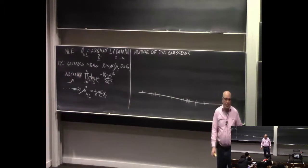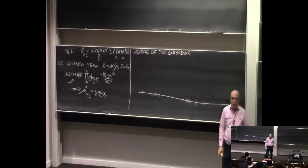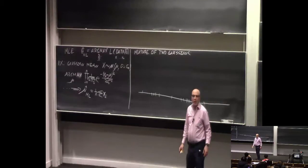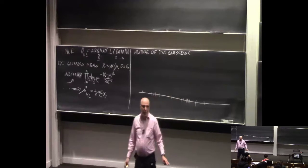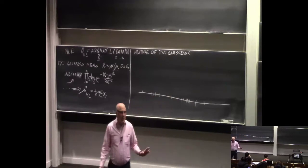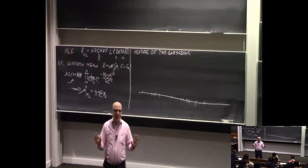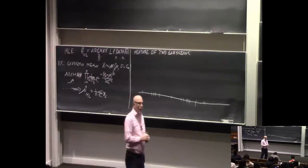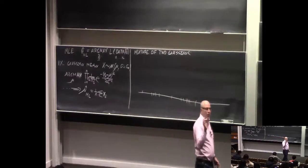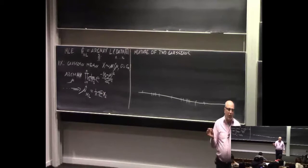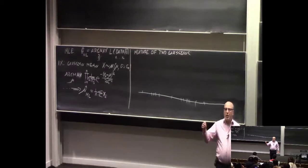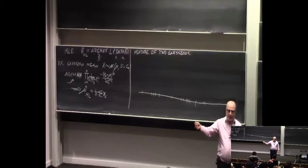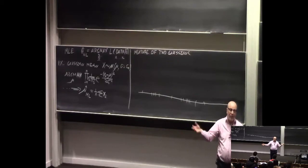Now let's go to a more difficult example and see where we get stuck. The more difficult example is a mixture of two Gaussians. You have two Gaussians, both with the same fixed known standard deviation. Your data is generated as follows: for every data point, you first choose randomly between the two Gaussians — uniformly, 50-50 — and then you draw a point from the chosen Gaussian. This is the simplest possible setting of a mixture of Gaussians.